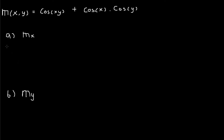Firstly, what we need to do is to differentiate this equation in regards to x. In order to differentiate this, we have to use chain rule. We have to differentiate the outer part first, which is cos(xy), and then differentiate the inner part, which is xy, all in regards to x.